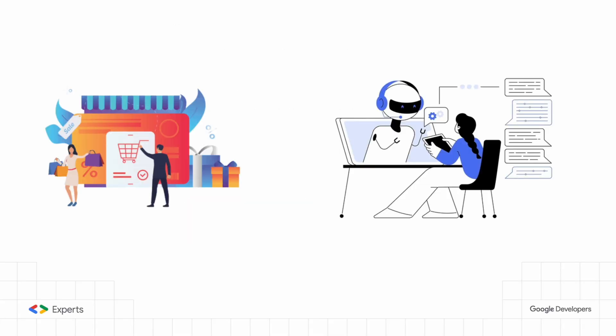Imagine an e-commerce company that relies on conversational AI agents for customer support. If the agent only has access to static data, it might not be able to answer questions about product availability, shipping timelines, etc. By integrating external data sources such as APIs from inventory management systems, shipping providers, and marketing platforms, the agent can access real-time information and provide accurate, up-to-date answers. Dynamic data sources are essential for conversational AI agents to stay relevant and effective in a constantly changing world.